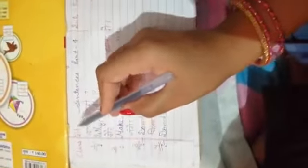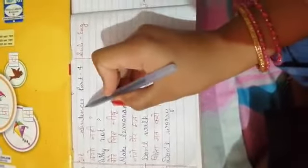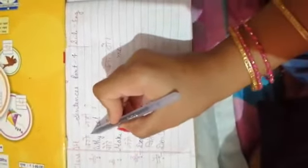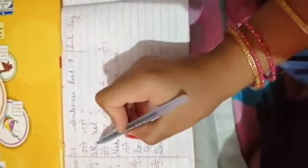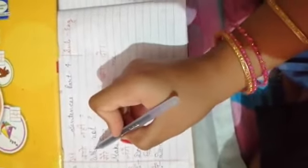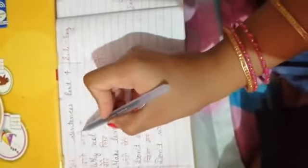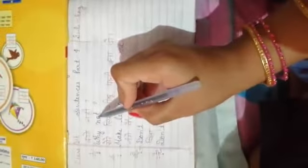Class first, subject is English, part four, sentences. First sentence is क्यों नहीं, क्यों नहीं, why not? Why means क्यों, not means नहीं. क्यों नहीं, why not?